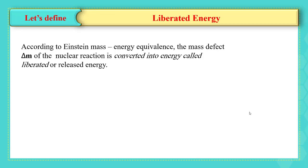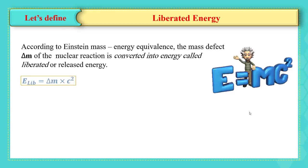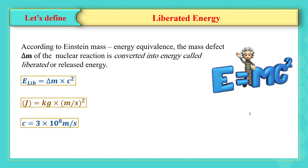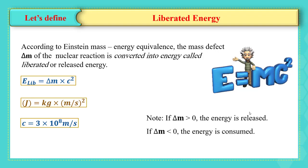According to Einstein's mass-energy equivalence, the loss in mass is converted into energy, and this energy is called liberated or released energy. It is equal to mass defect times the square of the speed of light in vacuum. The SI unit of energy is joule, and c is equal to 3 times 10 to the power of 8 meters per second. Note that if the mass defect is positive then the energy is liberated or released, and if the mass defect is negative then the energy is consumed.